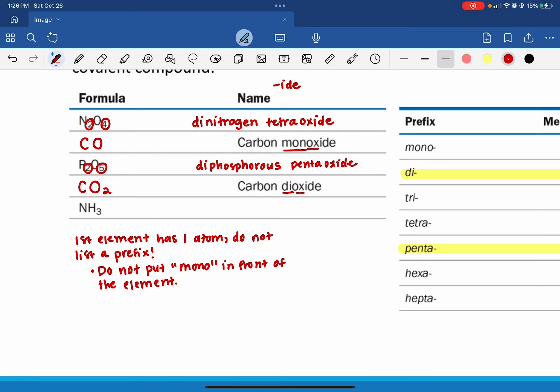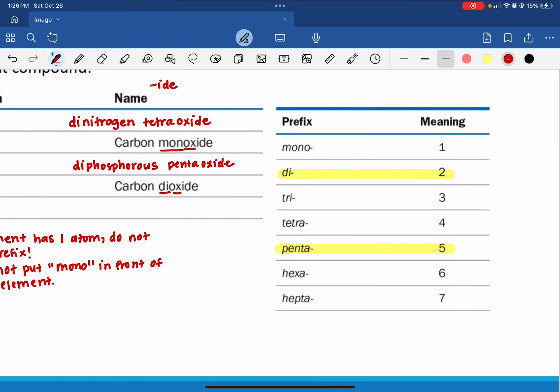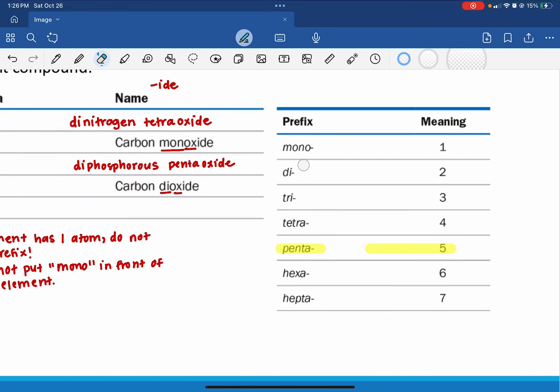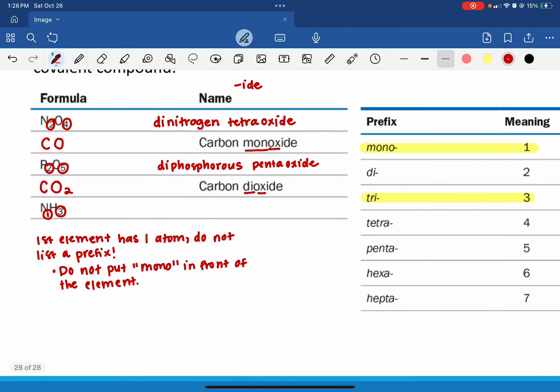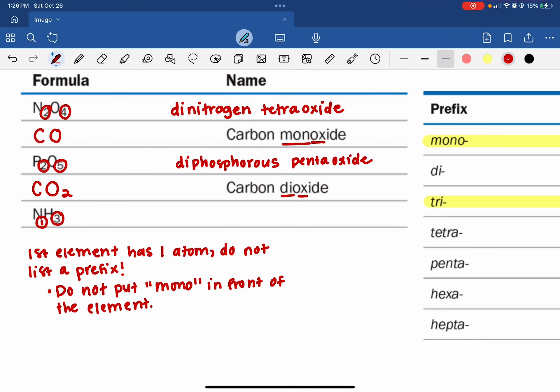And for the last one, there is one element here. And there are three elements in the second one. So we are going to highlight one and three. So one and three, mono and tri. Again, the exception here is for the first element. When it has one atom, we do not list the prefix mono. So we are just going to write out the name nitrogen.